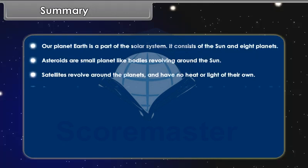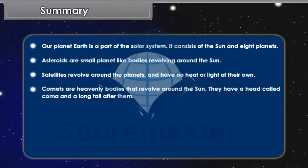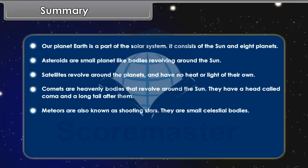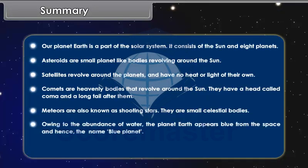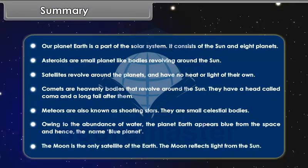Comets are heavenly bodies that revolve around the Sun. They have a head called Coma and a long tail after them. Meteors are also known as shooting stars. They are small celestial bodies. Owing to the abundance of water, the planet Earth appears blue from the space and hence the name Blue Planet. The Moon is the only satellite of the Earth. The Moon reflects light from the Sun.